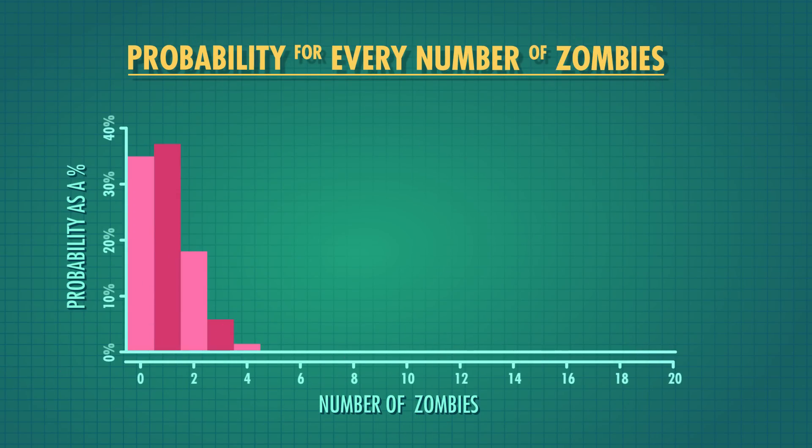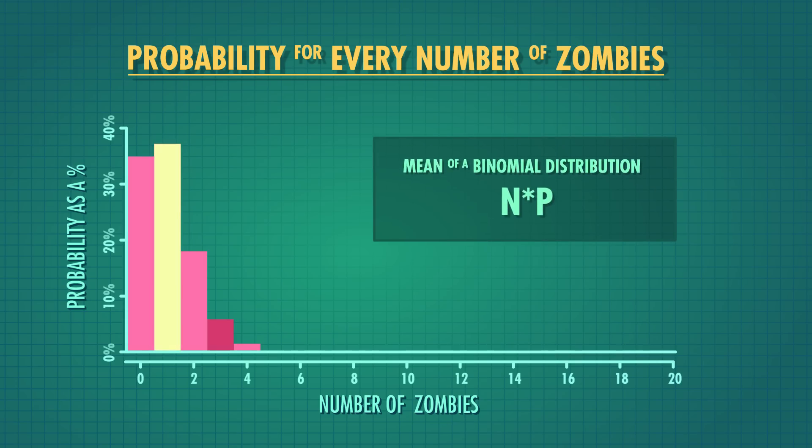I could try to guess the mean by looking at the graph of the binomial distribution. Just by eyeballing it, I'd say the mean is around 1 — and it is. The actual formula to find the mean of a binomial distribution is n times p, the probability of what we're interested in. Since the probability of being a zombie is 5%, on average about 5% of any population will be zombies. Since we have a group of 20, we expect about 5% of 20, or 1 zombie infection on average.